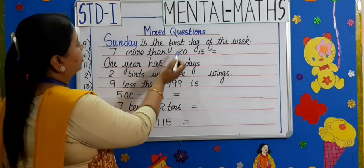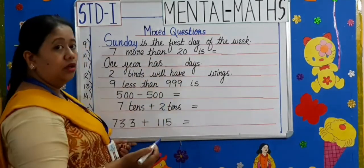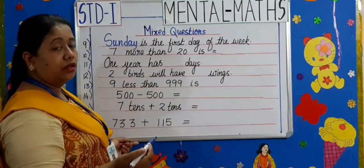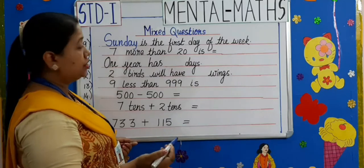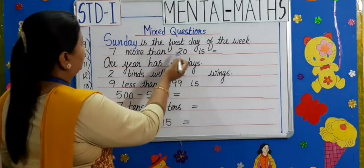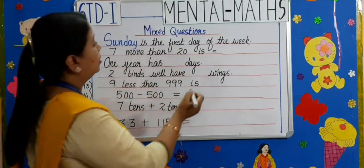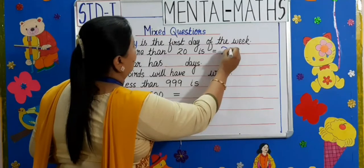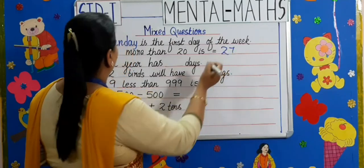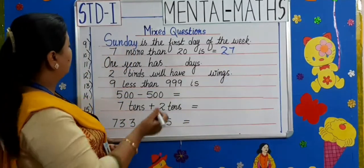Moving on to the next one: 7 more than 20 is? 'More than' means we have to do addition. 20 plus 7 is 27.